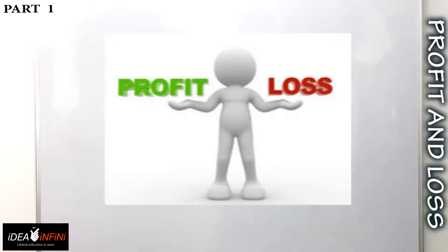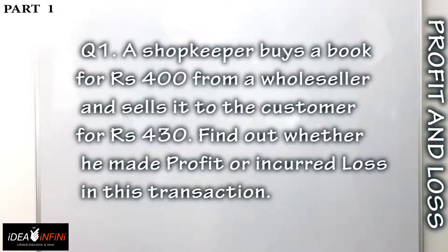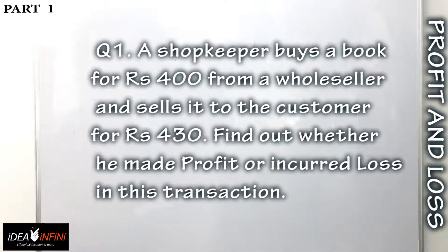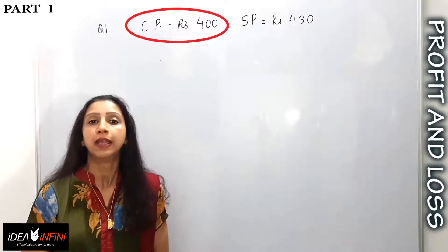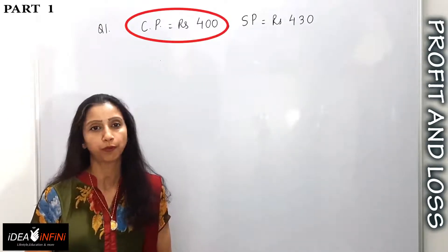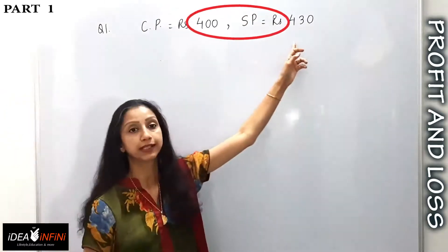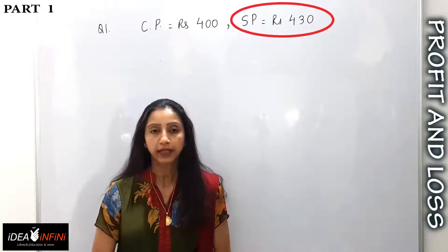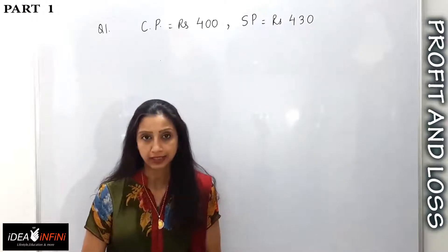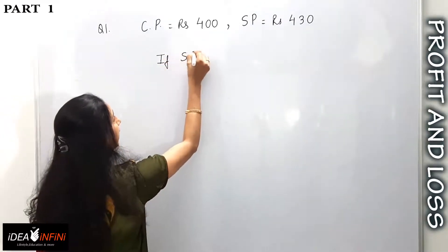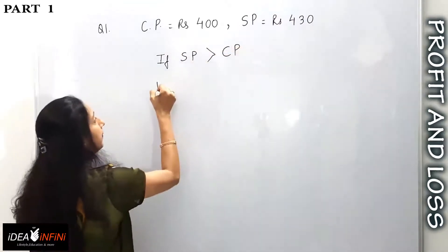Let's understand these concepts with some examples. In the first example, a shopkeeper buys a book for rupees 400 from a wholesaler and sells it to a customer for rupees 430. We need to find out whether he made a profit or incurred a loss. The cost price is rupees 400 and the selling price is rupees 430. Since the selling price is higher than the cost price, and if SP is greater than CP, we definitely have a profit.